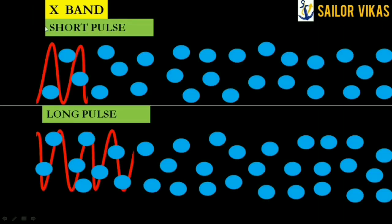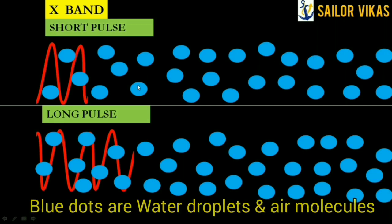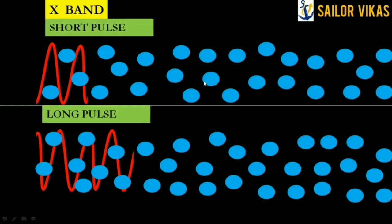To understand the usage of short pulse and long pulse, let us compare them. Here you can see the X-band radar short pulse and the X-band radar long pulse. I am going to compare the traveling of a short pulse and a long pulse of X-band. The blue dots represent the atmosphere — water molecules and oxygen molecules present in the atmosphere.